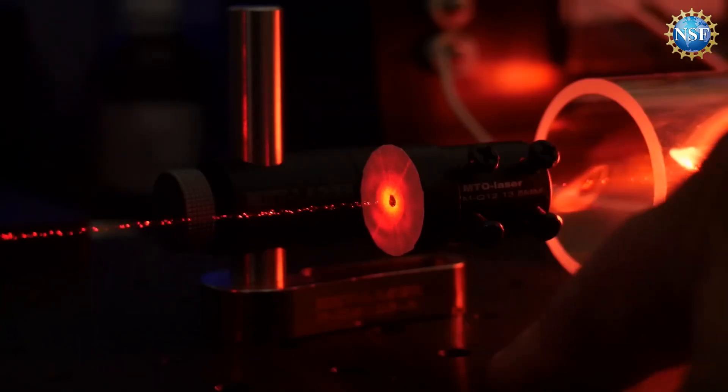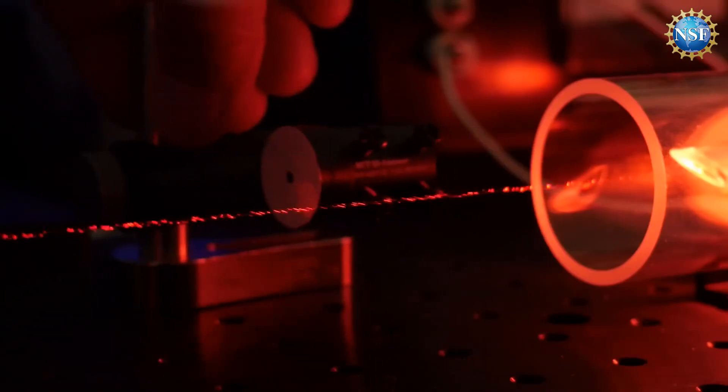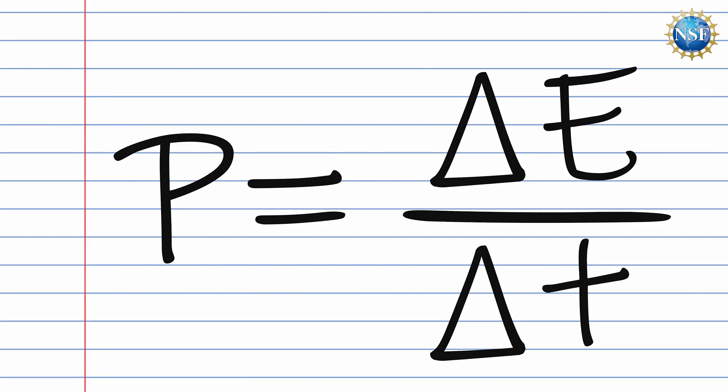There are two ways you can make a laser more intense. One way is to add more and more energy — but that's a knob you can only turn so much before you start needing a power plant. The other way is a pulsed laser. Power is defined as a rate: how much energy you get per unit time.